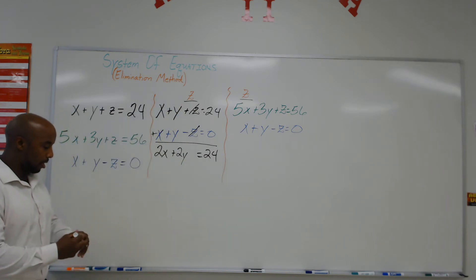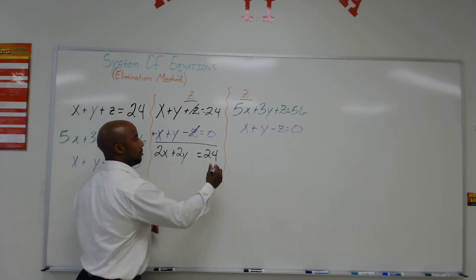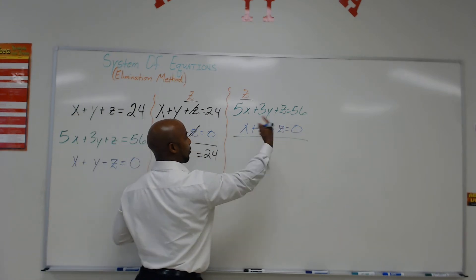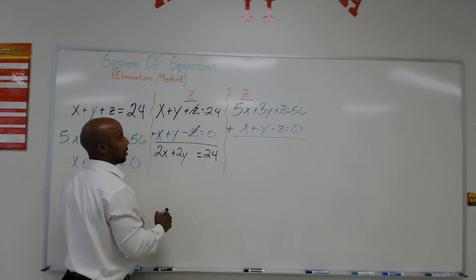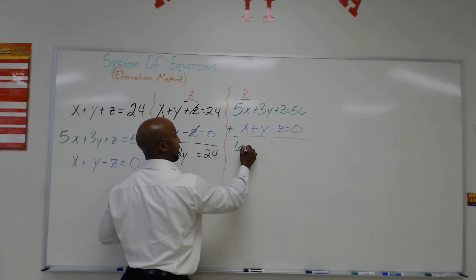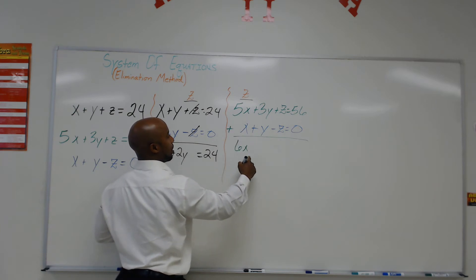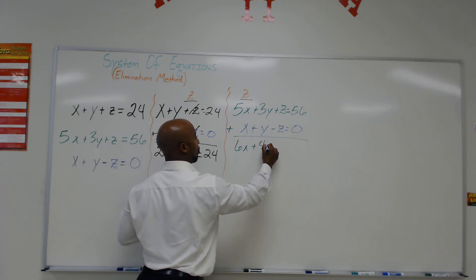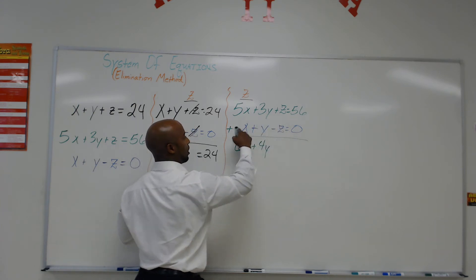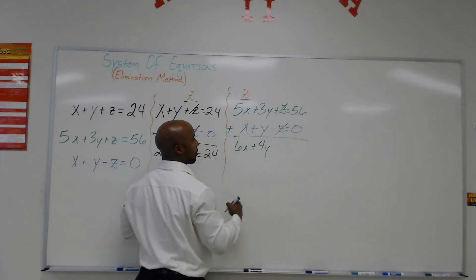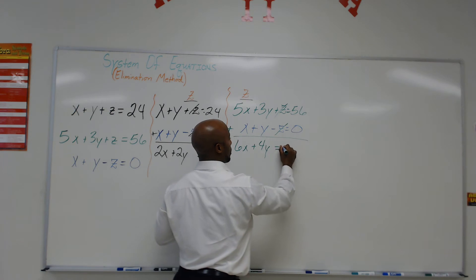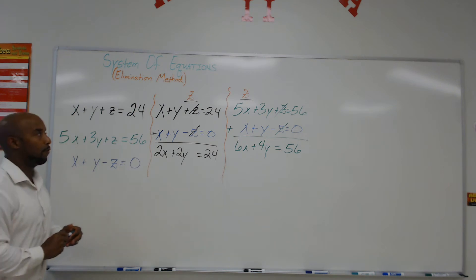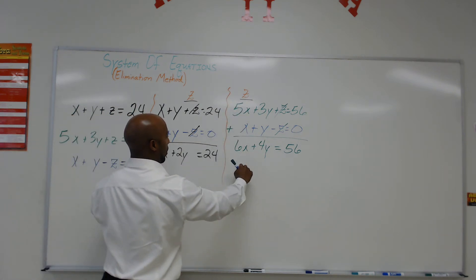I'm going to do that one more time. Here I have 5x plus 3y plus z equals 56 and x plus y minus z equals 0. Because the z sides are opposite, I'm going to add these two equations. 5x plus 1x gives me 6x. 3y plus 1y gives me 4y. The two z's cancel: 1z plus negative 1z. 56 plus 0 is simply 56. I have officially eliminated the z out of both equations.